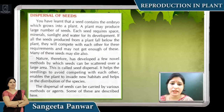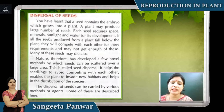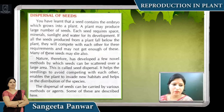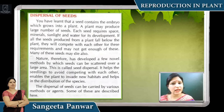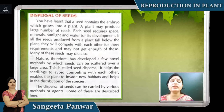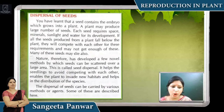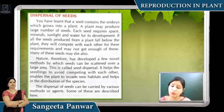A seed has an embryo from which a new plant grows. A plant may produce a large number of seeds, and each seed requires space, minerals, sunlight, and water for its development. If all the seeds of a plant fall below the plant, they will compete with each other for their requirements and many seeds may die. So nature developed a method to scatter seeds over a large area — this is called seed dispersal. Seed dispersal gives seeds a new habitat and proper space so they grow well.